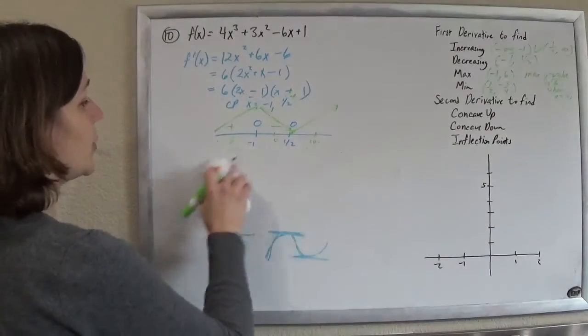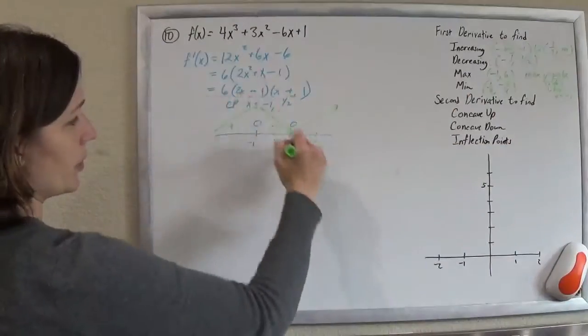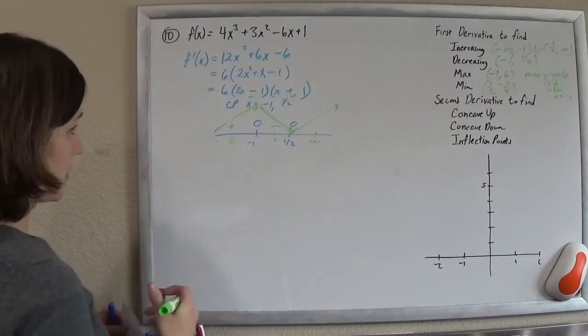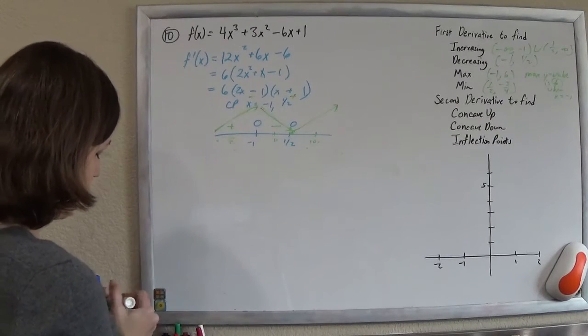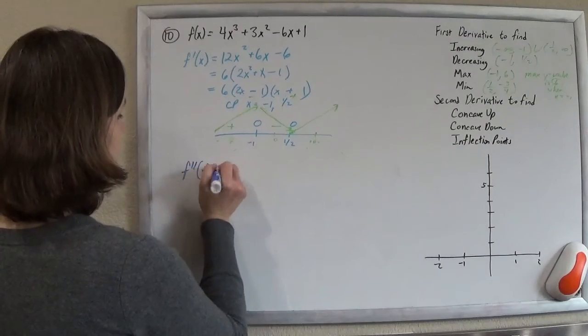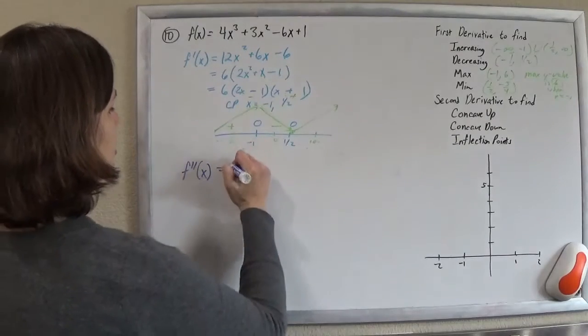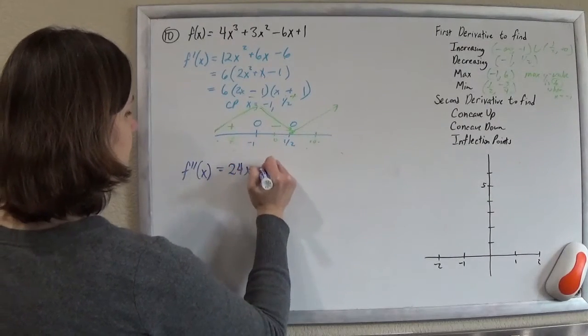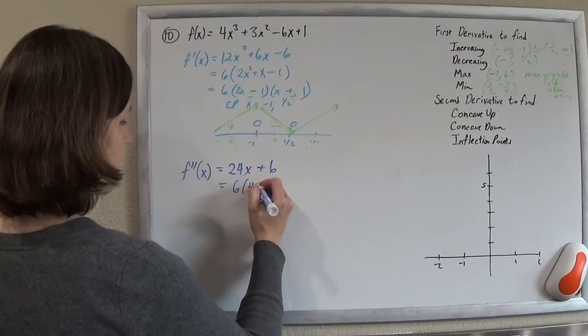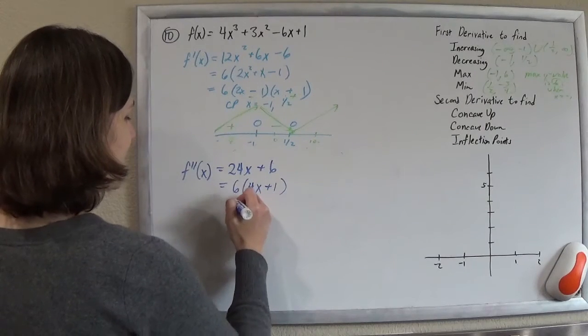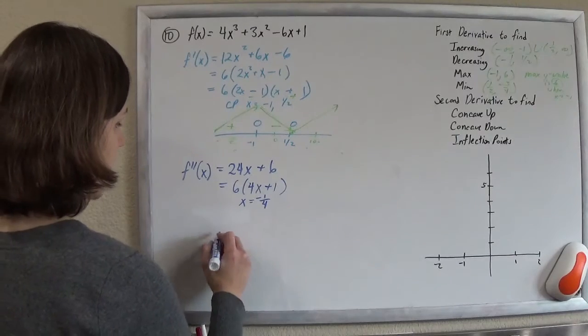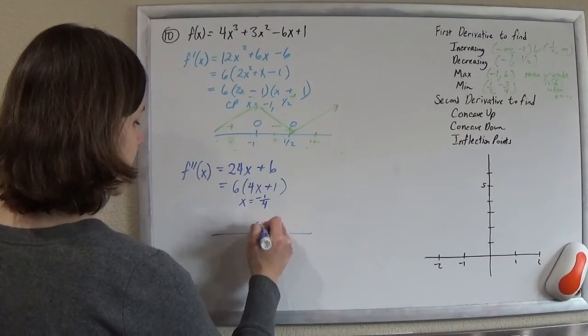And basically you have the shape of your function right there. We're just going to flesh it out a little bit with this concavity. We're going to find an inflection point. So we do the same process again just with the second derivative. So you have f''(x) is derivative of this guy. So 24x + 6. And I want to know, let's see, this is 6 times. I don't have to do this, but that's okay. So my critical point for my second derivative is negative 1/4.